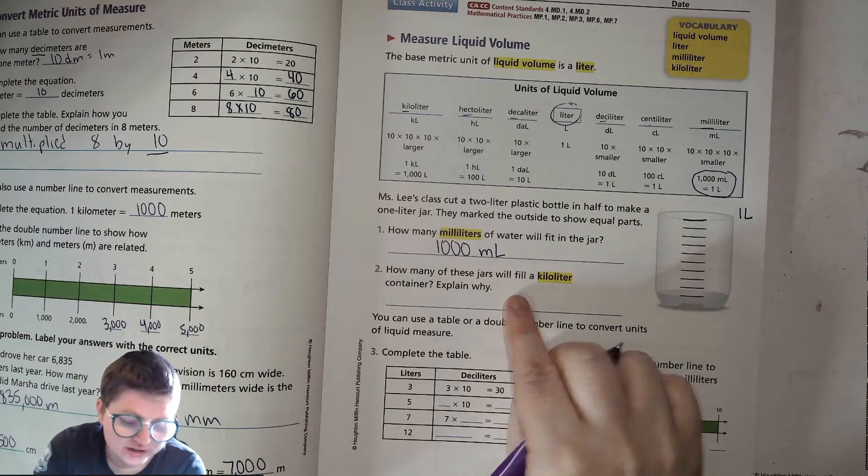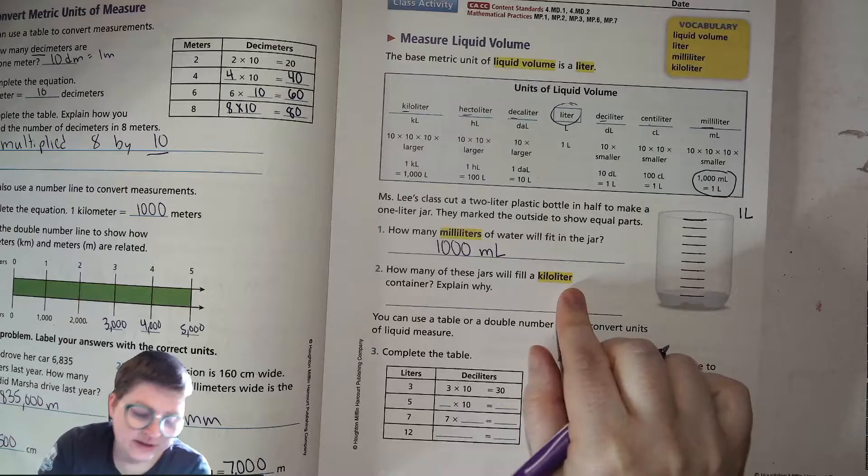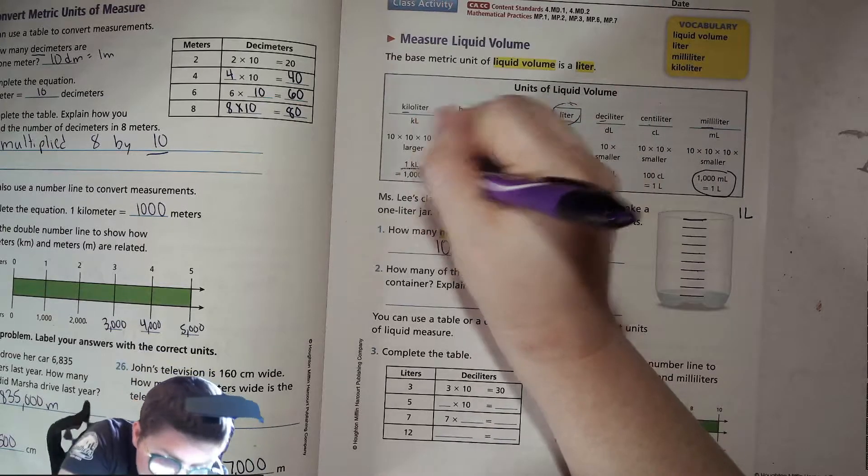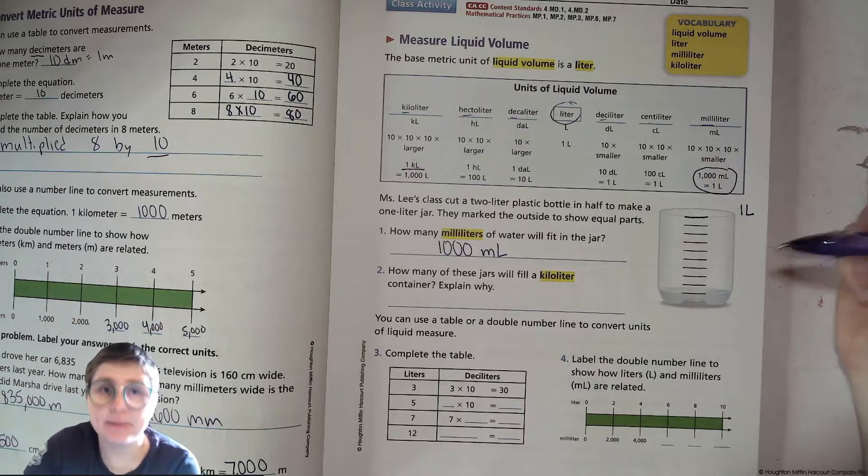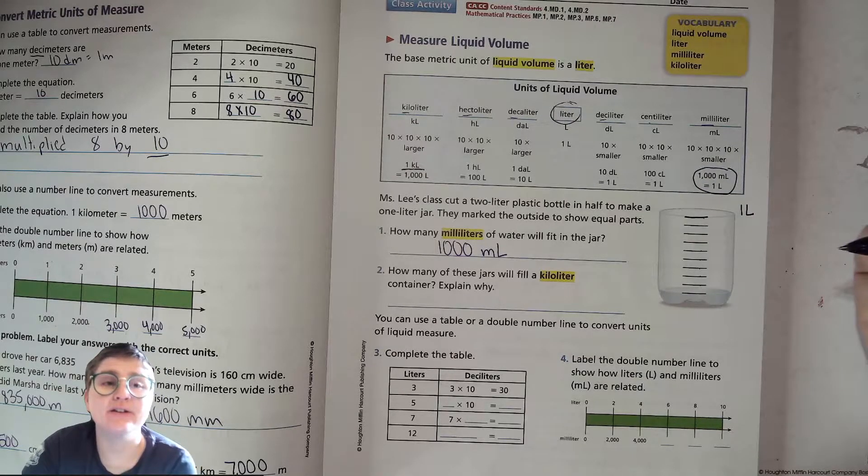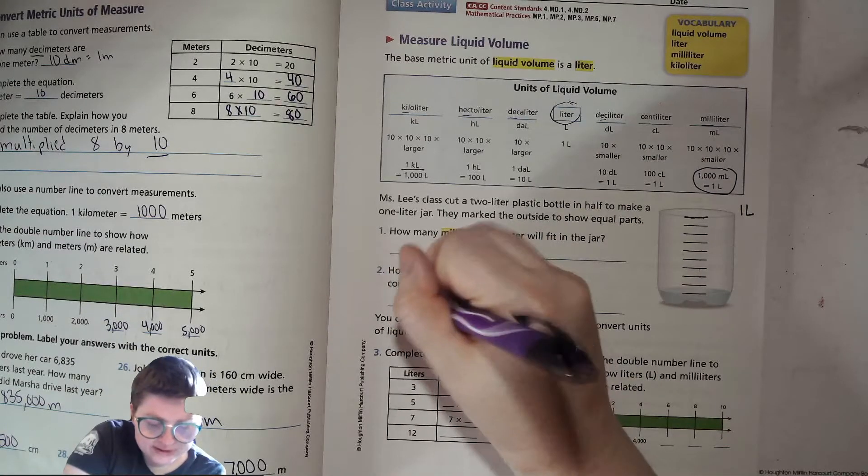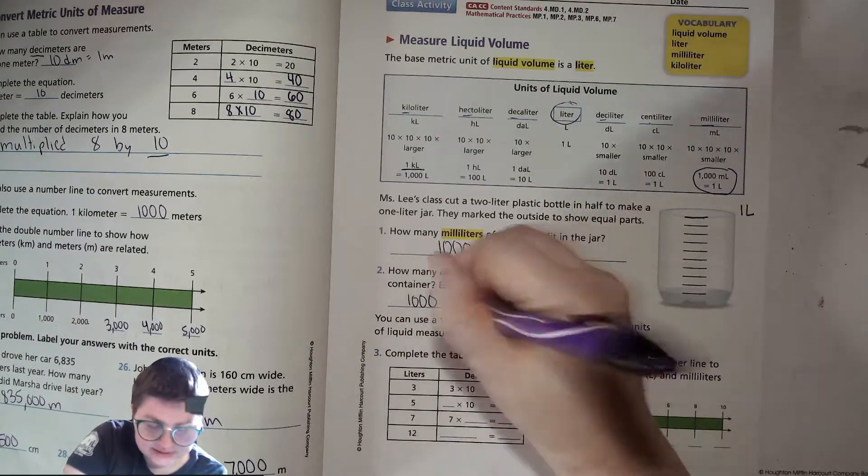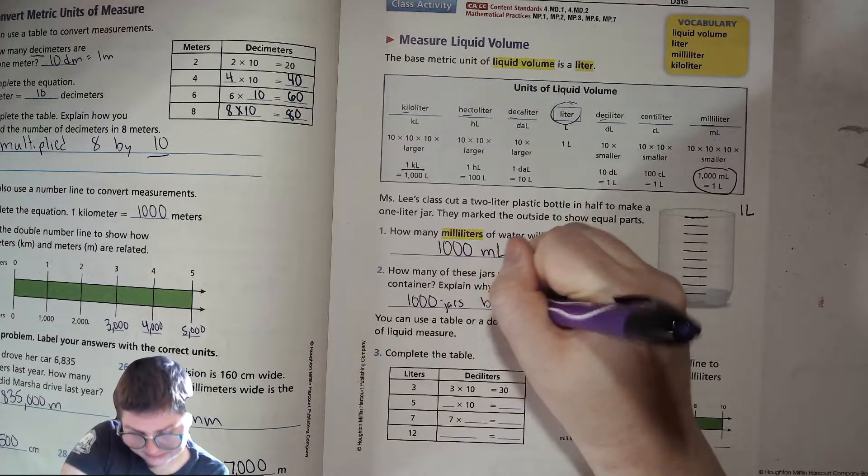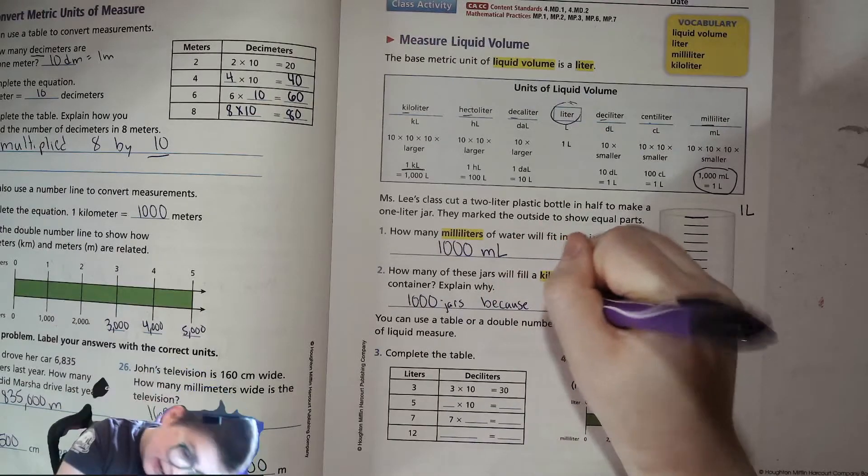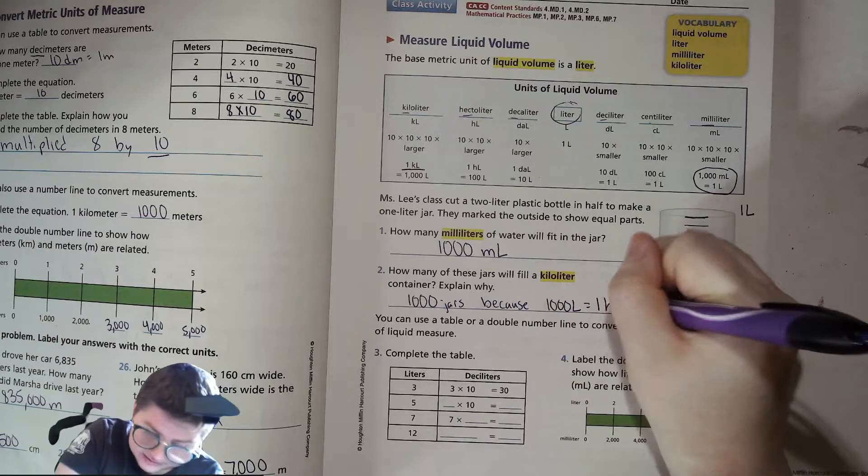How many of these jars will fill a kiloliter container? Explain why. Well, in one kiloliter, there are 1000 liters. If this amount is one liter, how many of these could fit in a kiloliter? 1000, right?